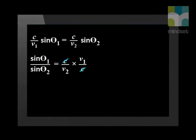We can rearrange this equation. So we can see that sin theta 1 divided by sin theta 2 equals c divided by v2 times v1 divided by c. The c's cancel in this equation. Therefore, we have sin theta 1 divided by sin theta 2 equals v1 divided by v2. Do you see that this equation relates the size of the angle to the velocity of the light wave in the substance?